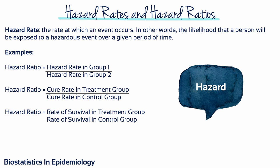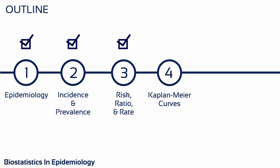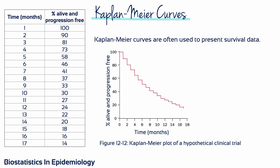Hazard ratios are ratios of rates — they can be hazard rates, cure rates, or survival rates. To construct a Kaplan-Meier curve from survival data, you place time on the x-axis and the percentage of people who are progression-free and surviving on the y-axis. You can imagine two curves on this plot, one for a treatment group and one for a control group, which would help you see the difference in survival rates between the two groups.